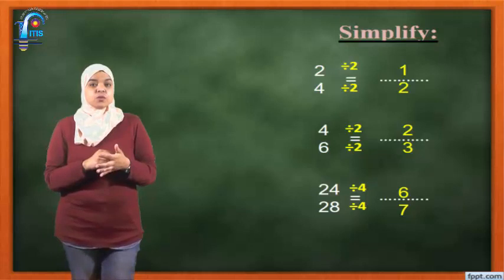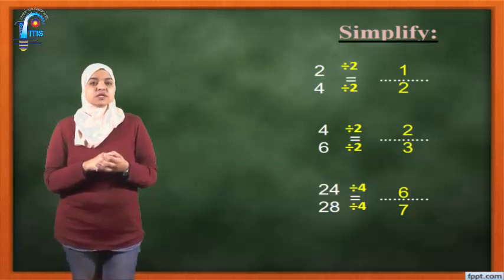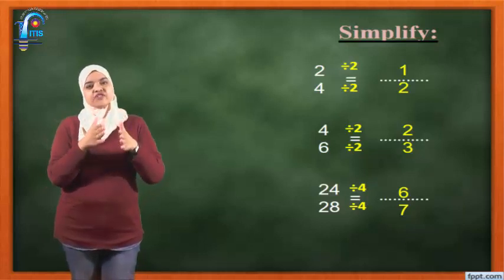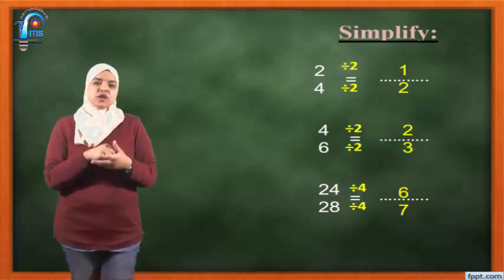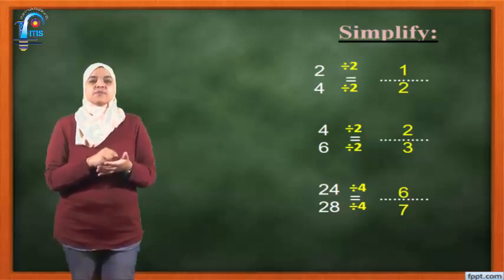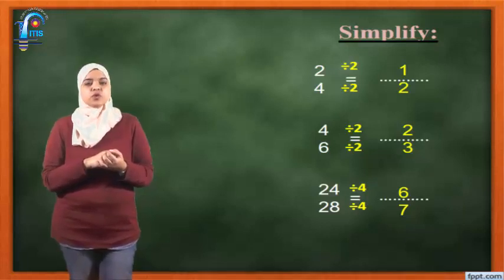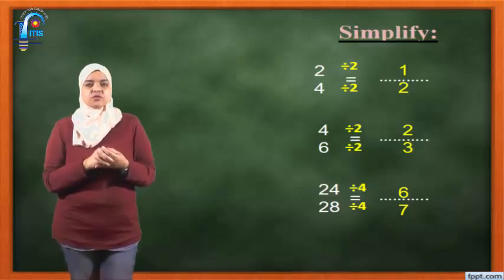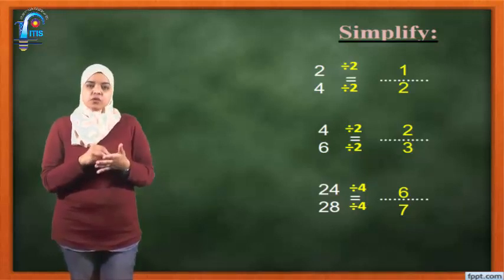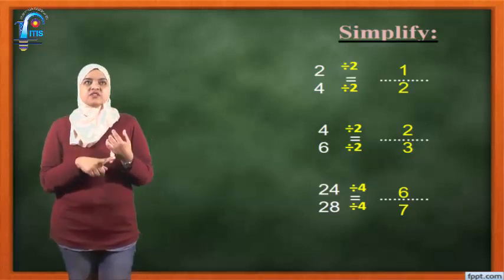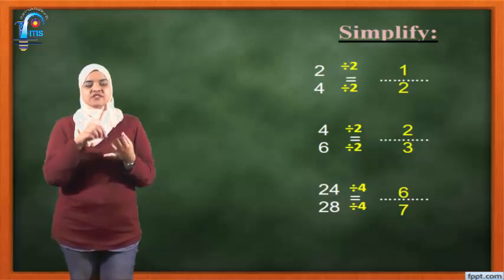Simplify — it's one of the most important questions. Simplify means I have a big fraction and I want to make it smaller. How? Simplify means division — the only sign I'm going to use in simplify is division. The first one: 2 over 4 equals what? So 2 and 4 — in which tables are they both together? Searching from table 2 to table 9.